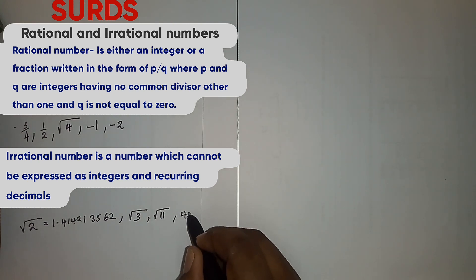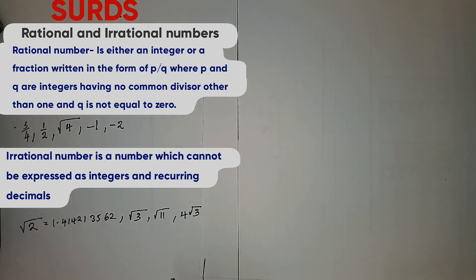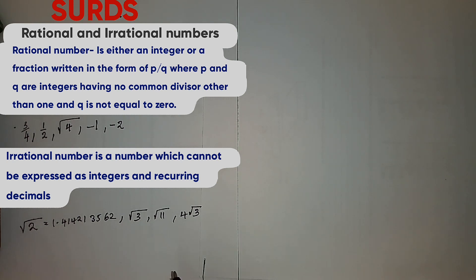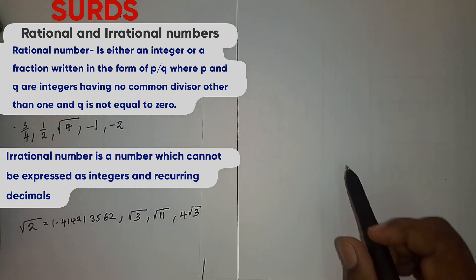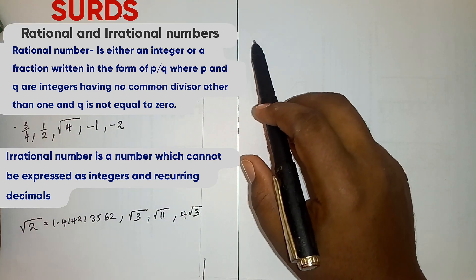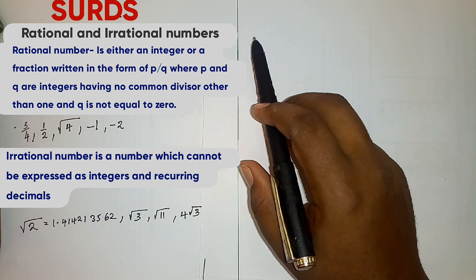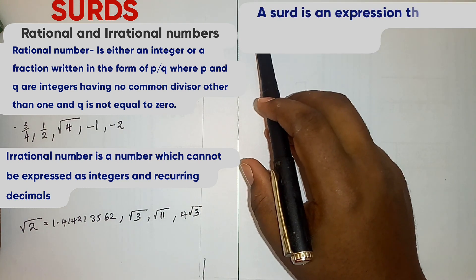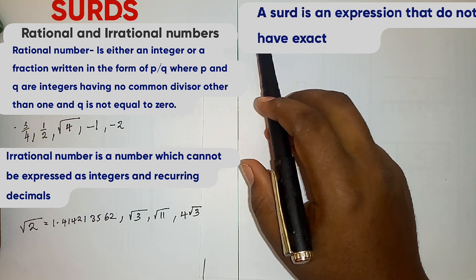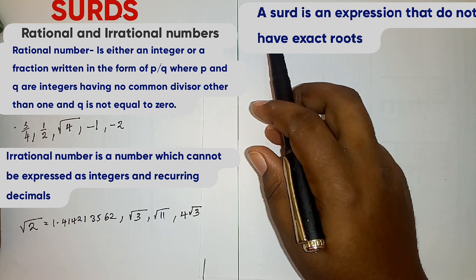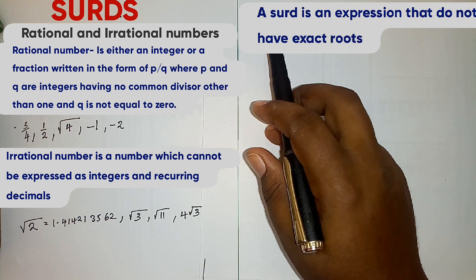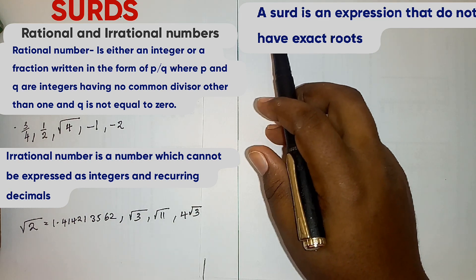We also have 4 root 3 — all these are examples of irrational numbers. So once we have understood what rational and irrational numbers are, we can now define a surd. A surd is an expression that does not have exact roots.